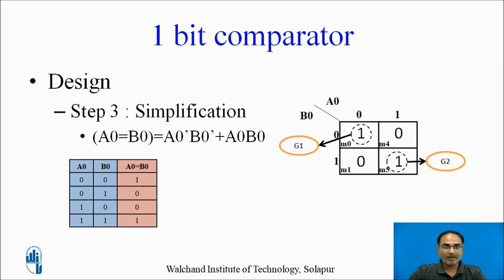Now let us go for the next output: a equals b. We have two minterms, and again a 2-variable K-map. After placing the minterms, no pairing is possible, so we have two groups g1 and g2. For g1 the equation is a0'·b0', and for g2 it is a0·b0. So the final equation is a0'·b0' + a0·b0.